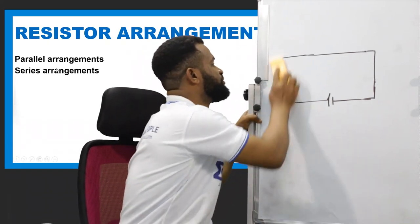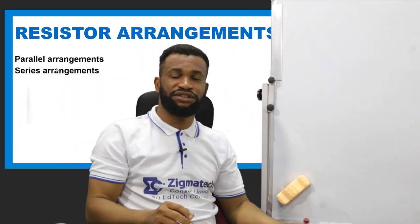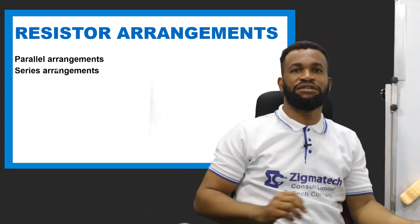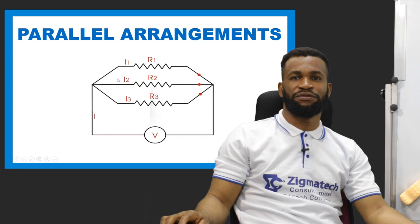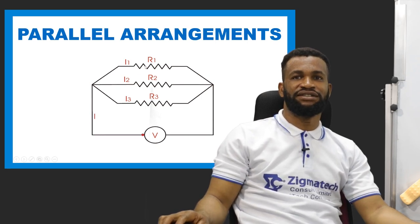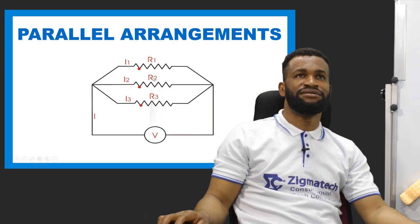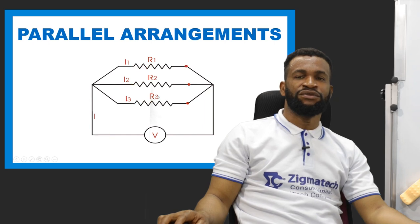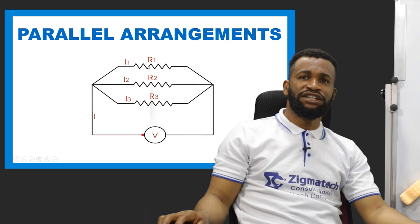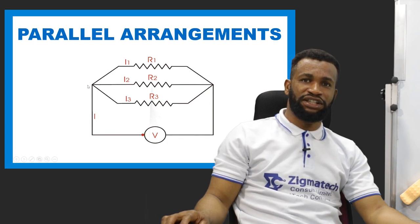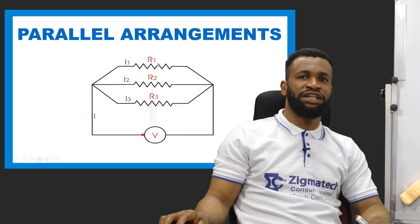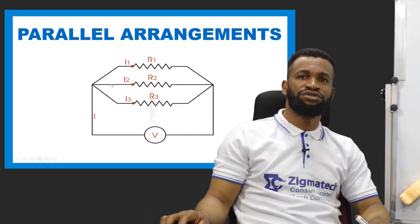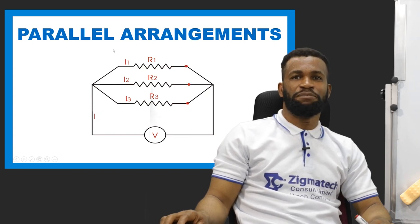In resistor arrangement, we have parallel arrangement and series arrangement. In parallel arrangement, looking at this connection, we have R1, R2, and R3. All the terminals of R1, R2, and R3 are connected to two common junctions — both terminals of each resistor share those same two junction points. That means all three resistors share two different junctions, and we say we have a parallel arrangement.